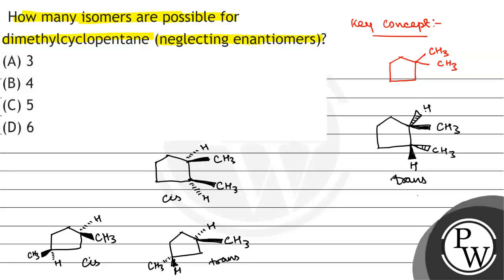So how many total isomers are there? 1, 2, 3, 4, 5. The total number of isomers possible for dimethyl cyclopentane are 5. So this will be the final answer.